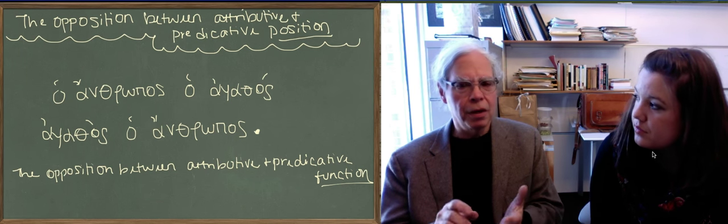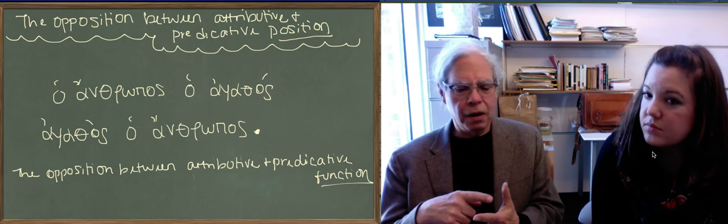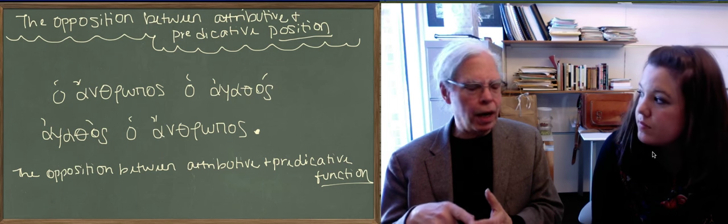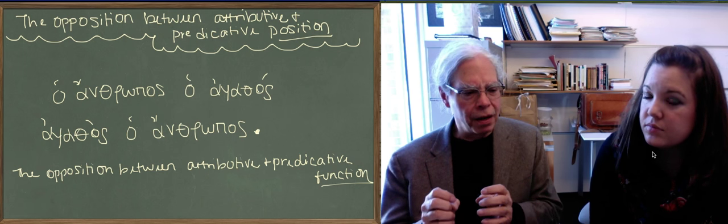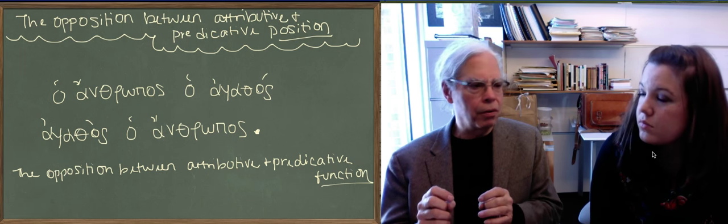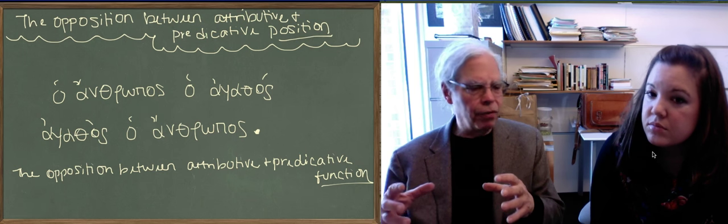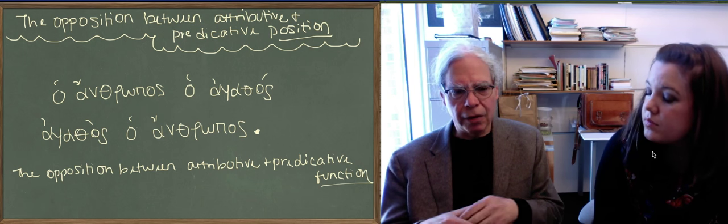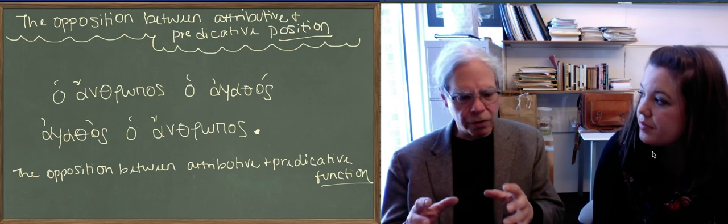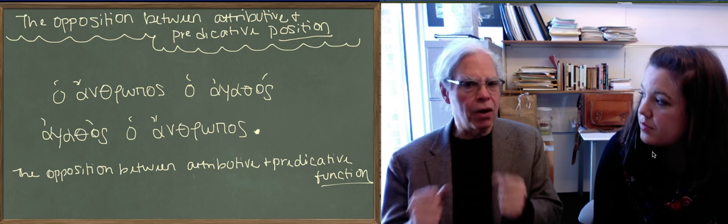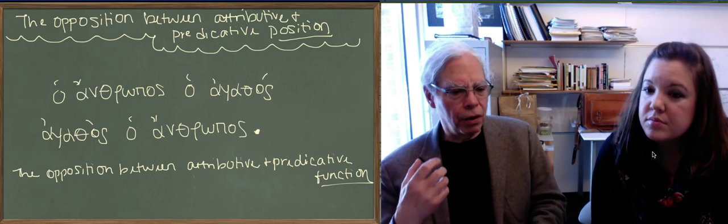And the word order rule is this: a modifier that is in an attributive position if it follows the article that agrees with a noun. It doesn't have to immediately follow. There can be a little word like de, which means and or but, or chi, or sometimes even a little bit longer word in between the article and the noun. But it has to be very, very close to it. So don't get thrown off if it's not totally next to it. But the modifier that follows an article goes with the noun that that article agrees with. And that's what defines attributive position.